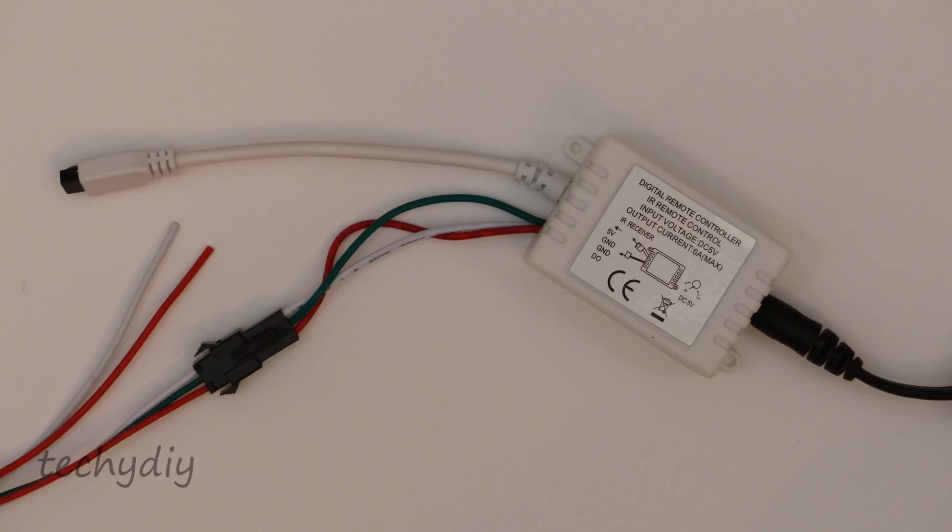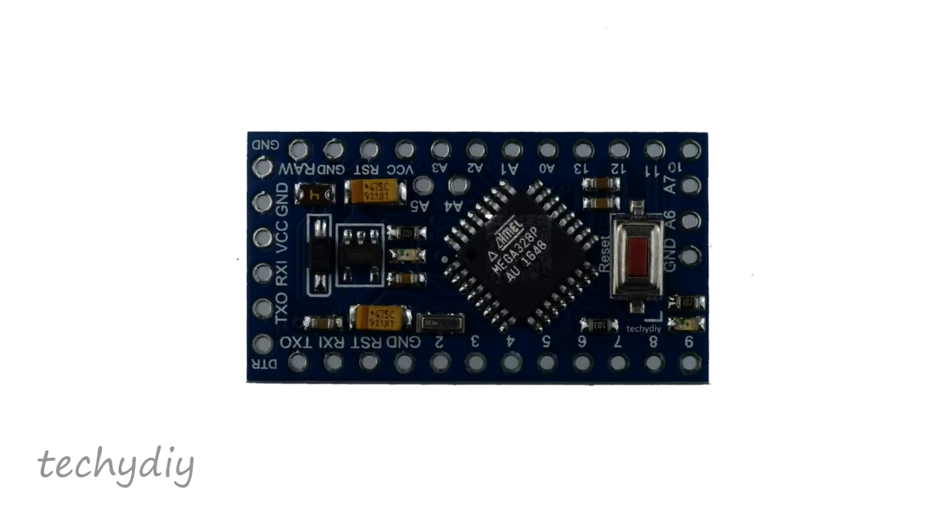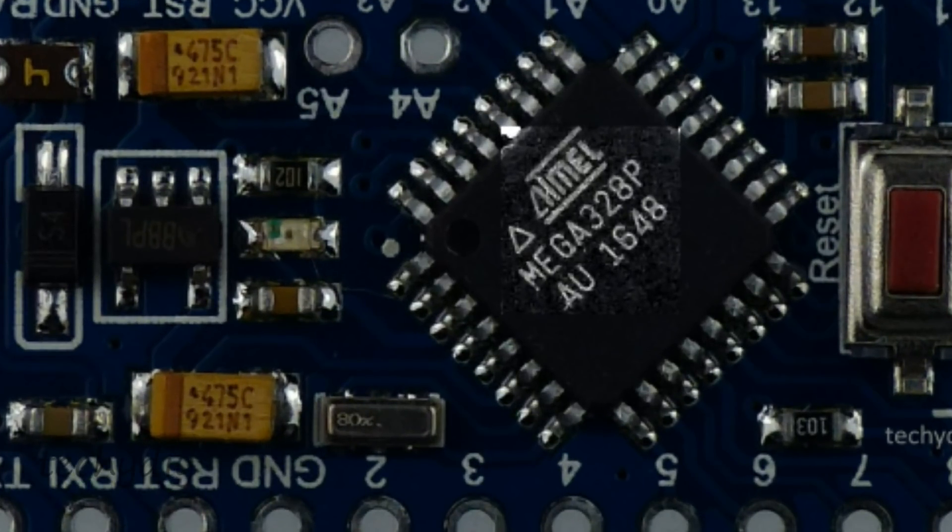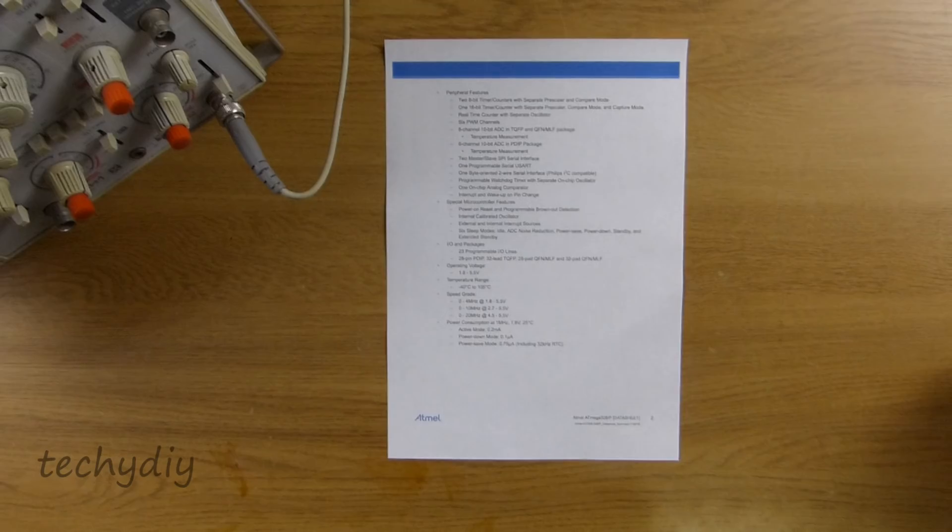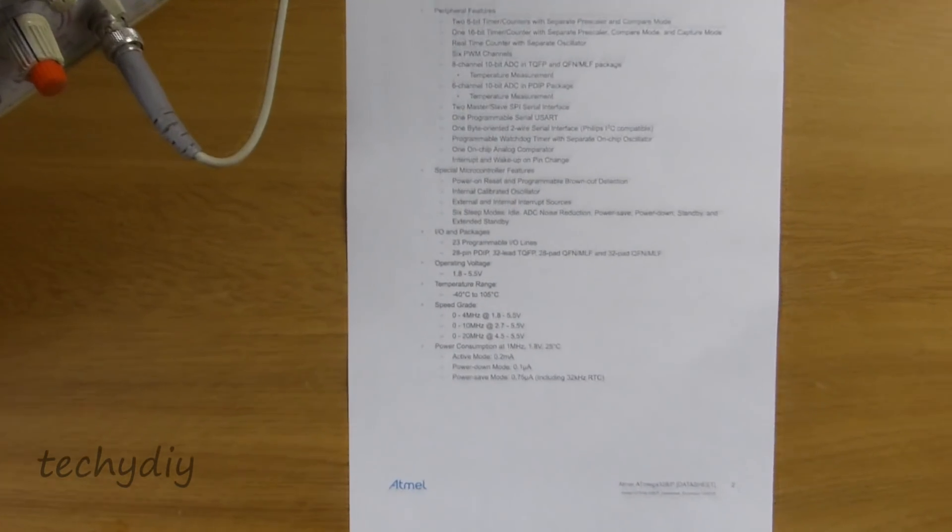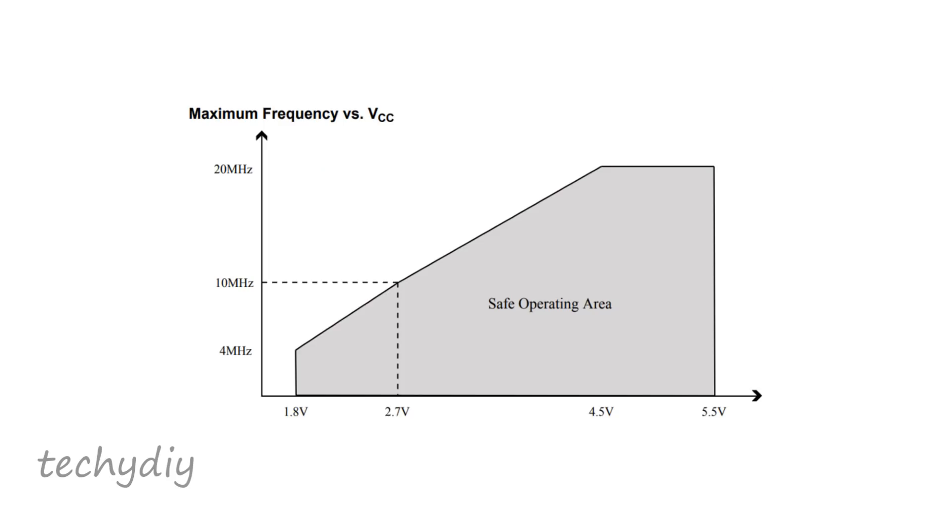The next part of the project is to replace the LED controller with an Arduino. The board that I'm using is a Pro Mini clone which is based around the ATmega328P. The same microcontroller used in the Arduino Uno. It is available in 3.3 volt or 5 volt versions. The 3.3 volt version has an 8 megahertz clock speed and the 5 volt version has a 16 megahertz clock speed. The ATmega328P on the Pro Mini can operate from 1.8 volts to 5.5 volts but the actual supply voltage required depends on the clock speed.